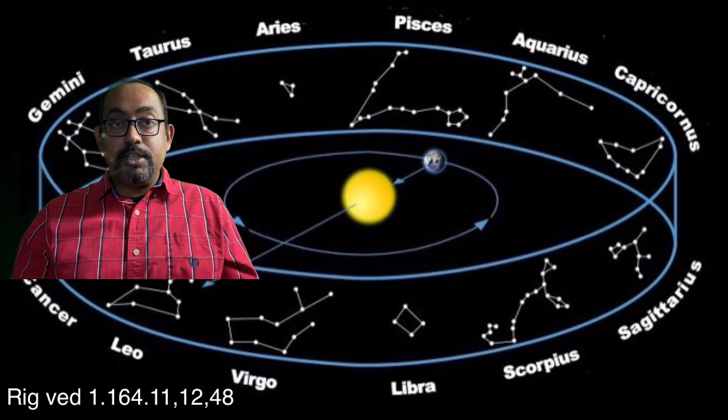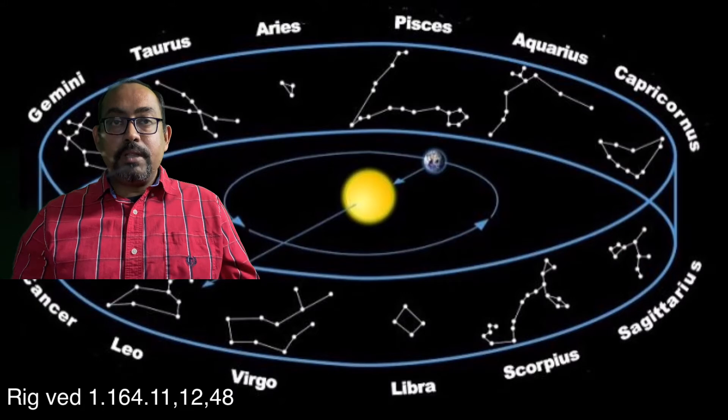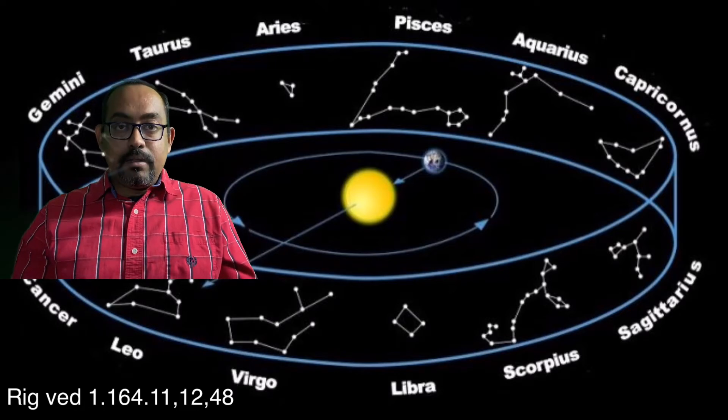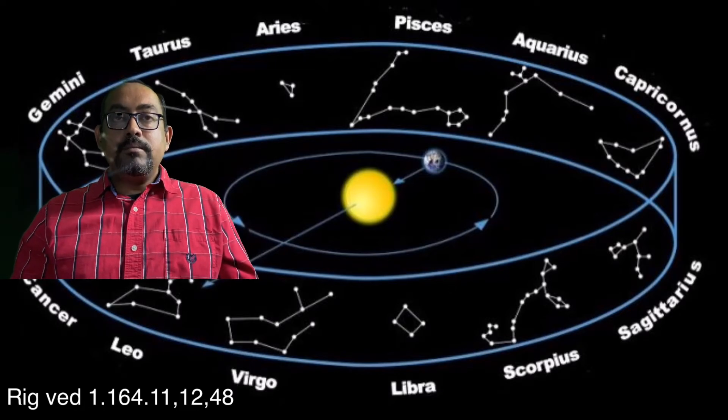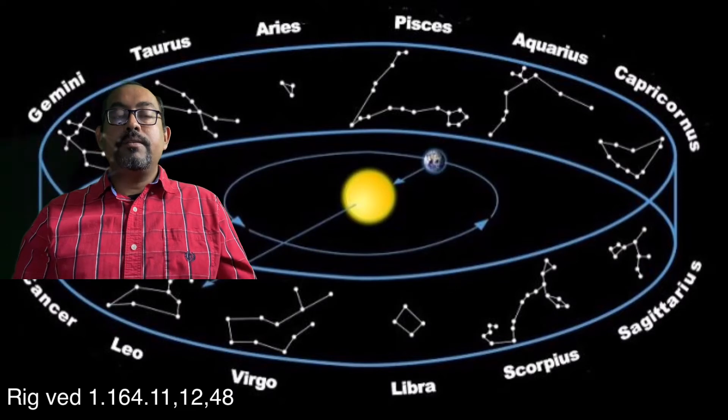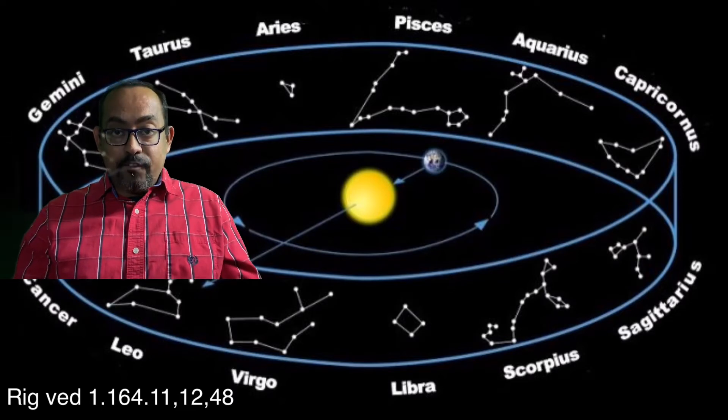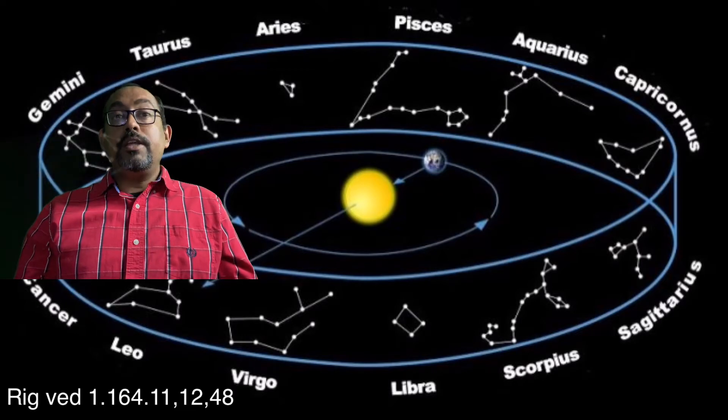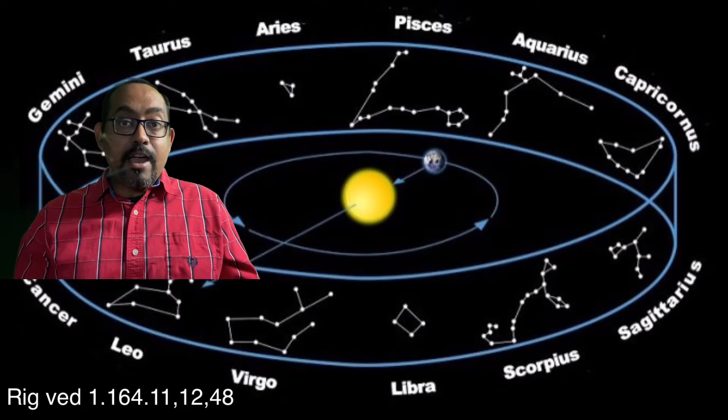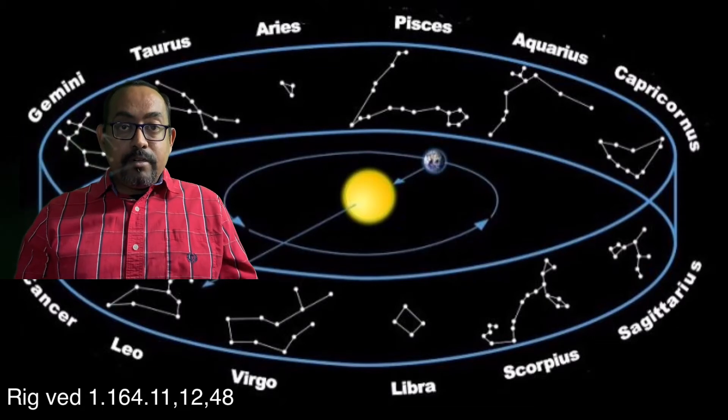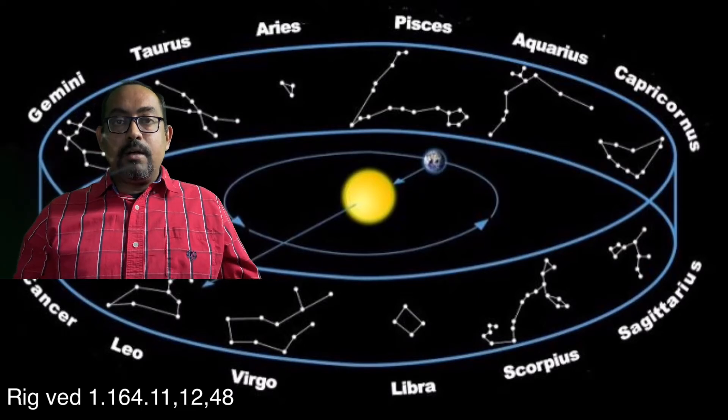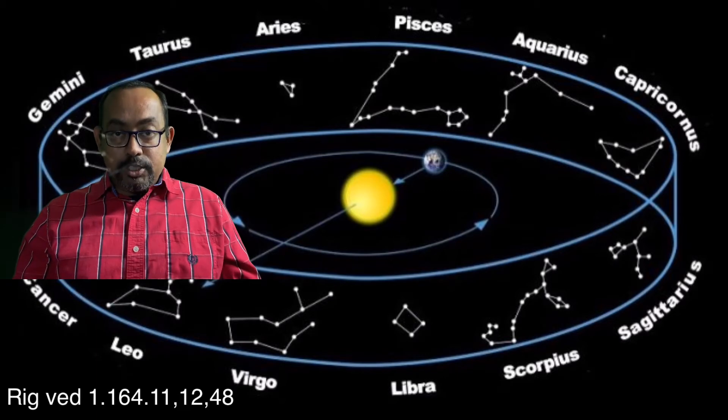In this mantra what is happening here is twelve spokes, one wheel, three navel as I already explained - three navel is nothing but an ellipse. Now who can know this? Together three hundred and sixty have been placed. Very important point, viewers - three hundred and sixty have been placed and they don't shake.